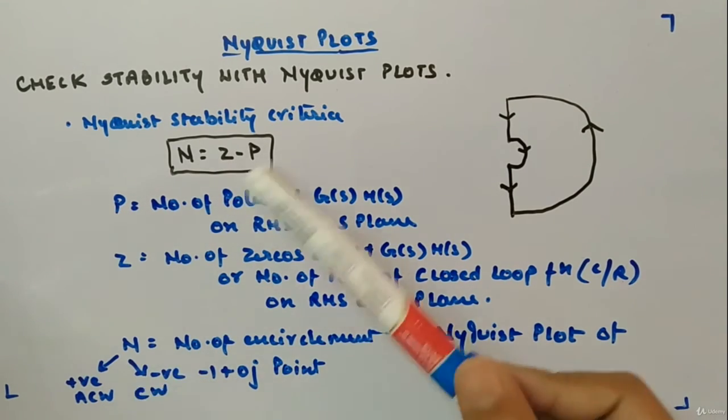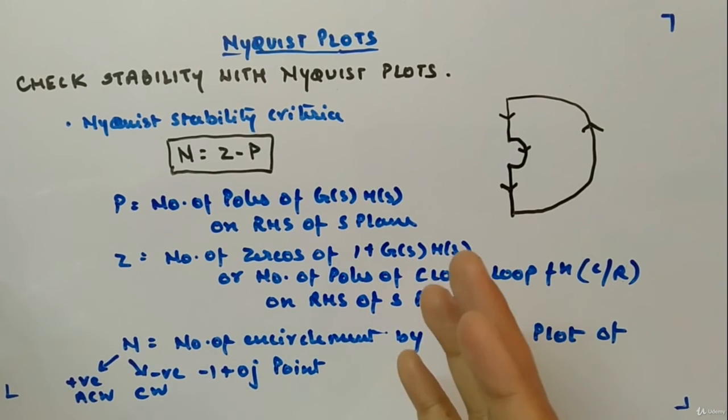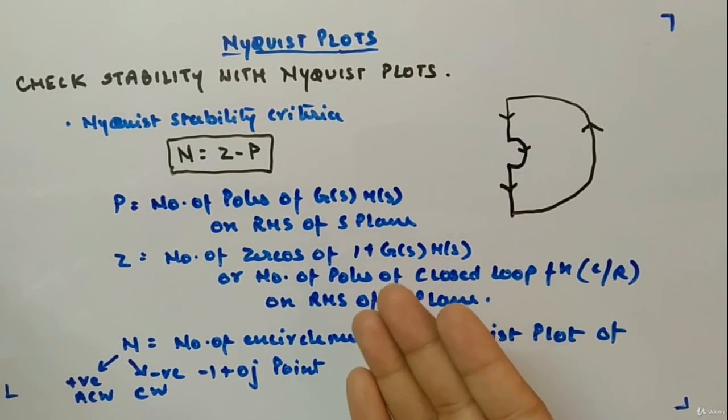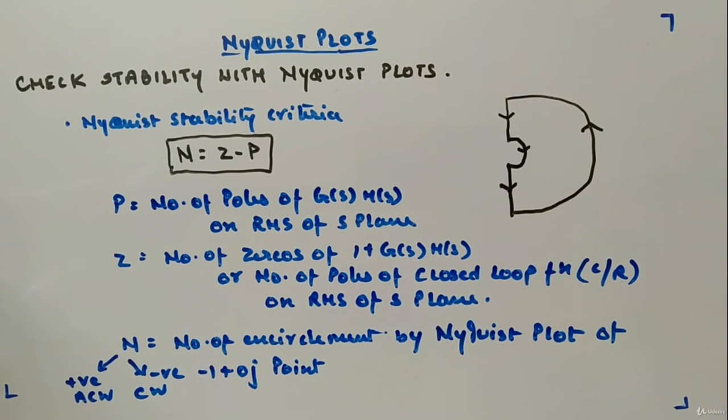Rest everything is same. The definition of P, definition of Z, definition of N, everything will be same. So we will see how to use it in examples.